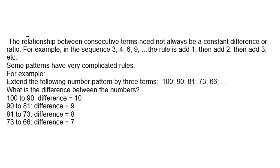Some patterns have very complicated rules. For example, extend the following number pattern by 3 terms: 100, 90, 81, 73, 66. So what is the difference between the numbers? From 100 to 90, the difference is 10.